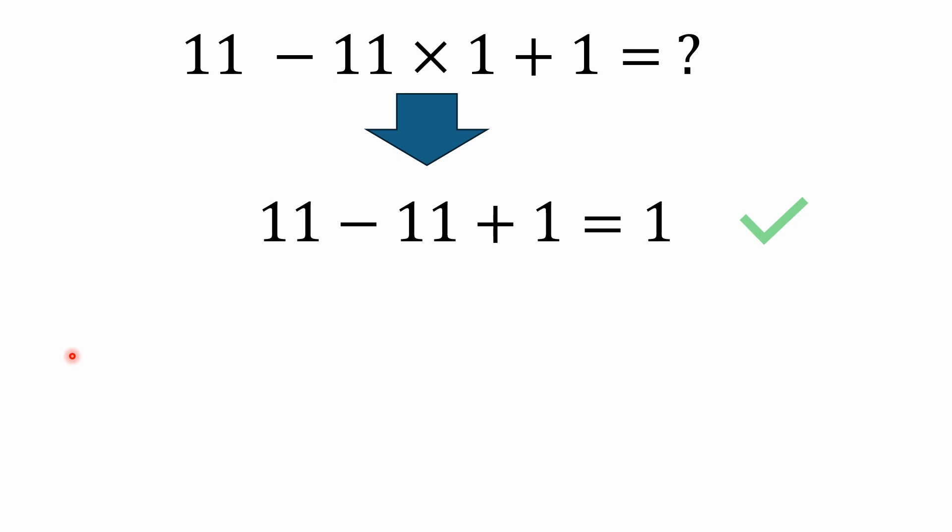You remember your order of operations — multiplication has precedence over addition and subtraction, so we have to do the multiplication first. And this one's really simple because it's just 11 times 1, and 11 times 1 is 11.